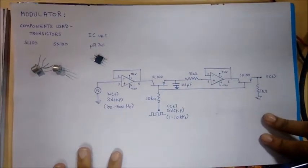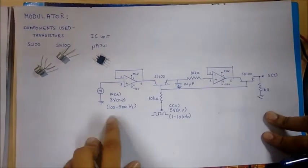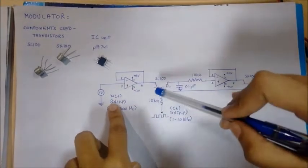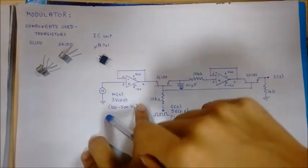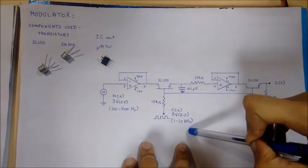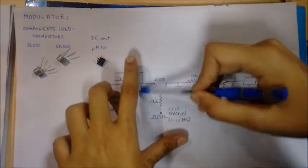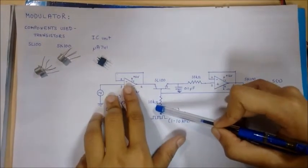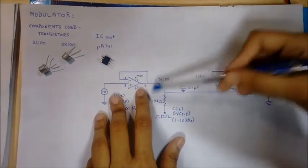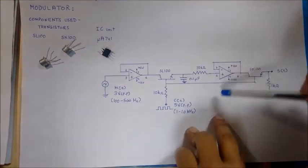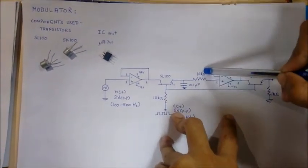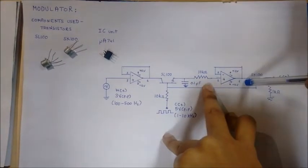We will provide our sine wave input at pin 3 of IC MUA741. The IC acts as a buffer, so the sine wave is propagated through the buffer, and we introduce our carrier wave, which is a square wave with a suitable frequency. This section is our sample-and-hold section of the circuit, which comprises an SL100 transistor and a 0.1 microfarad capacitor. This sample-and-hold circuit will help us naturally sample the waveform — the product of our sine wave and square wave. The final output waveform is then propagated through to the next IC MUA741.